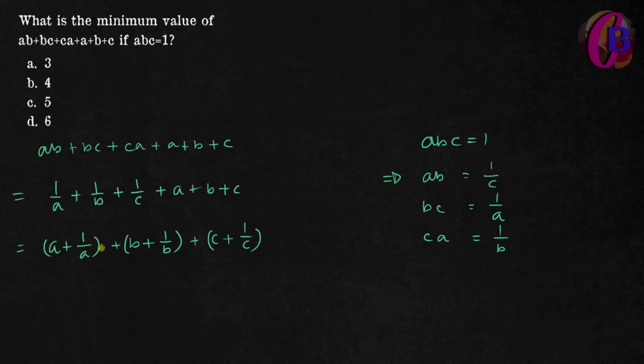Each term is at least 2. So 2 plus 2 plus 2 equals 6. The AM-GM inequality explanation is in the description of this video. Therefore, the minimum value is at least 6.